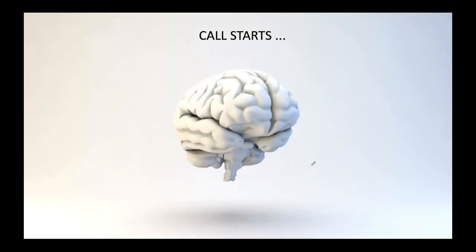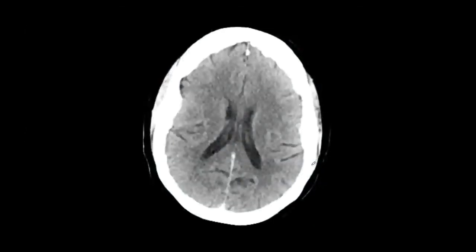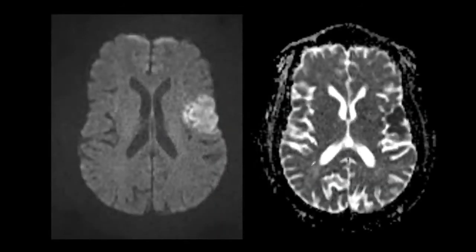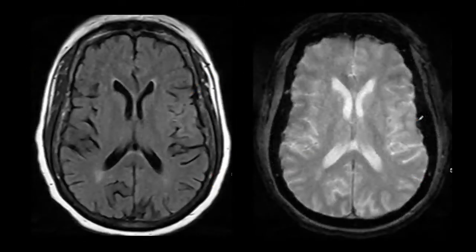First case: 72-year-old female with acute onset right facial droop, history of colon cancer with lung metastases and atrial fibrillation. CT head shows no obvious difference between the hemispheres — gray matter looks preserved, ventricles look alright. On MRI, the DWI sequence shows increased signal and the ADC sequence shows decreased signal in the left MCA distribution, in the region of the upper convexity — consistent with restricted diffusion.